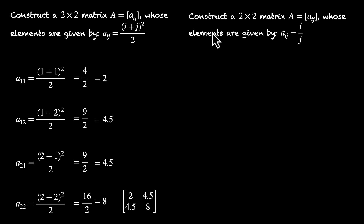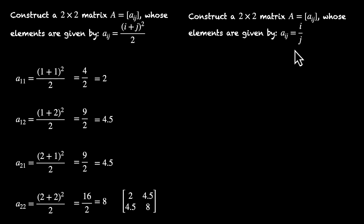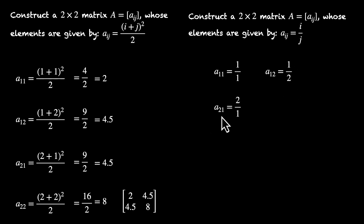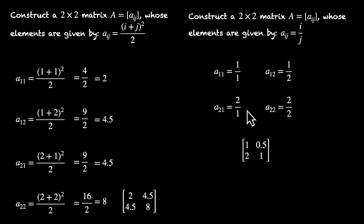Let's try one more. Construct a 2x2 matrix A whose elements are given by Aij equals i divided by j. This formula says to divide the row number i by the column number j. A11 is 1/1 = 1, A12 is 1/2, A21 is 2/1, and A22 is 2/2. So the matrix becomes [1, 1/2; 2, 1].